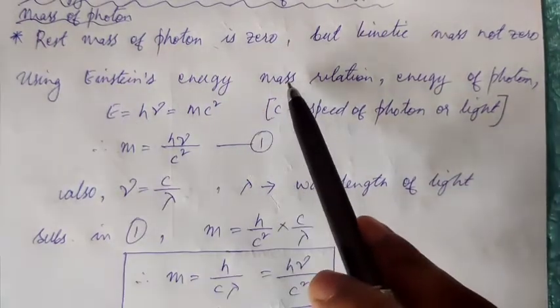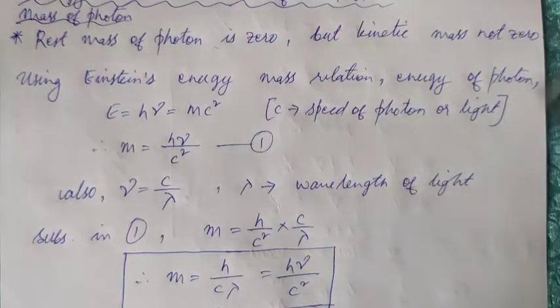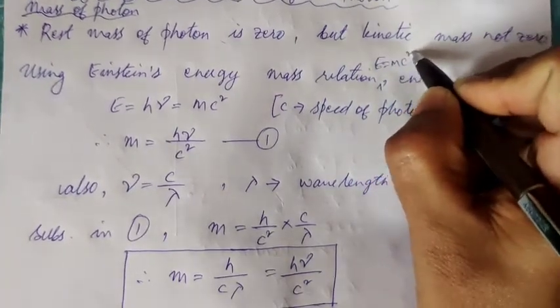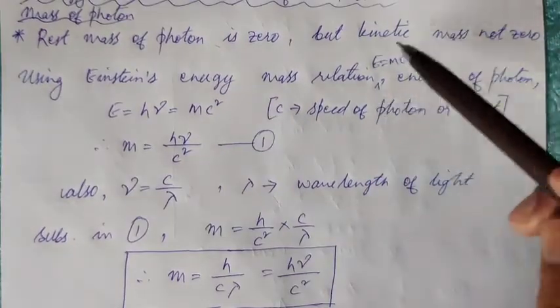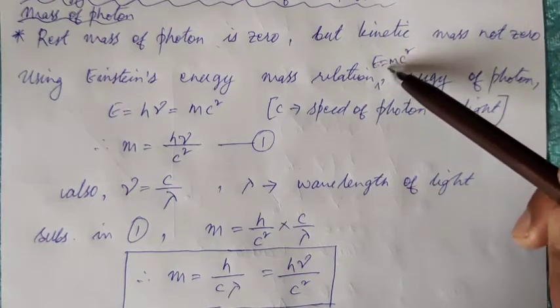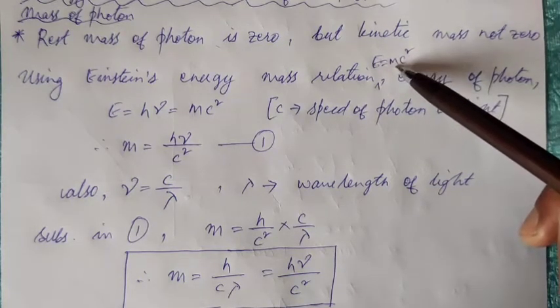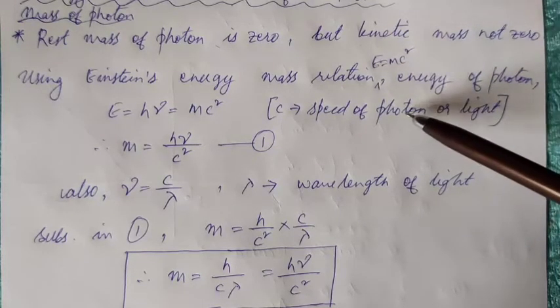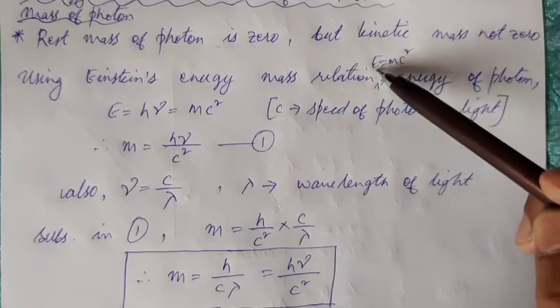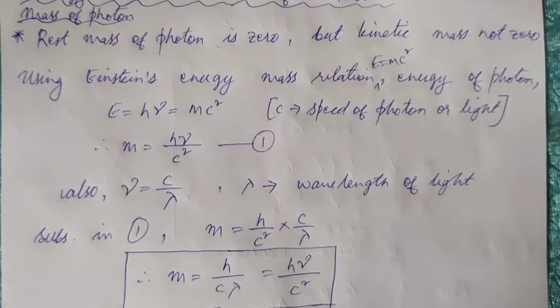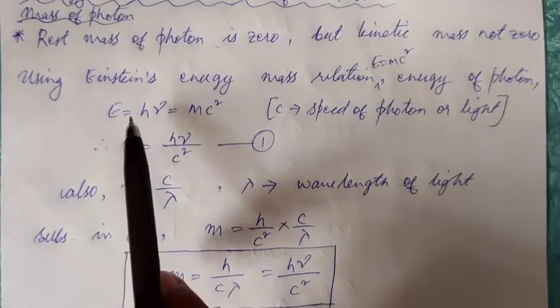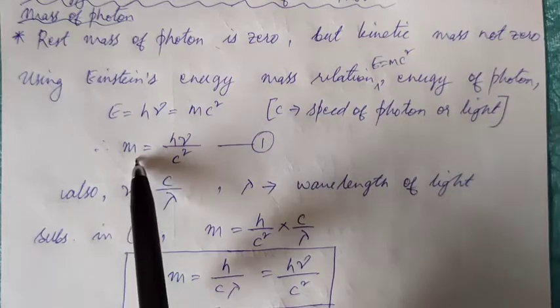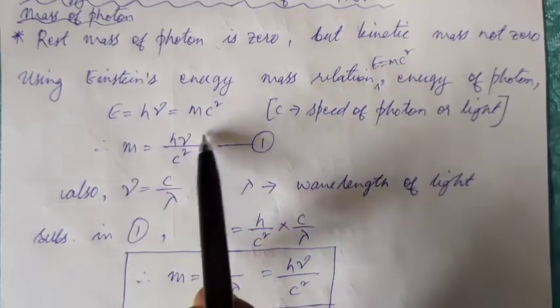Now from Einstein's energy mass relation, what is energy mass relation that of Einstein? It is E is m c squared. This is called Einstein's energy mass relation. From Einstein's energy mass relation, m is the kinetic mass of photon, c is the speed of light or the speed of photon. Therefore, the energy of a photon is m c squared. But from Planck's quantum theory, we also know that the energy of a photon is h into nu. So E is h nu, which is m c squared. From here, the mass of the photon is h nu by c squared.